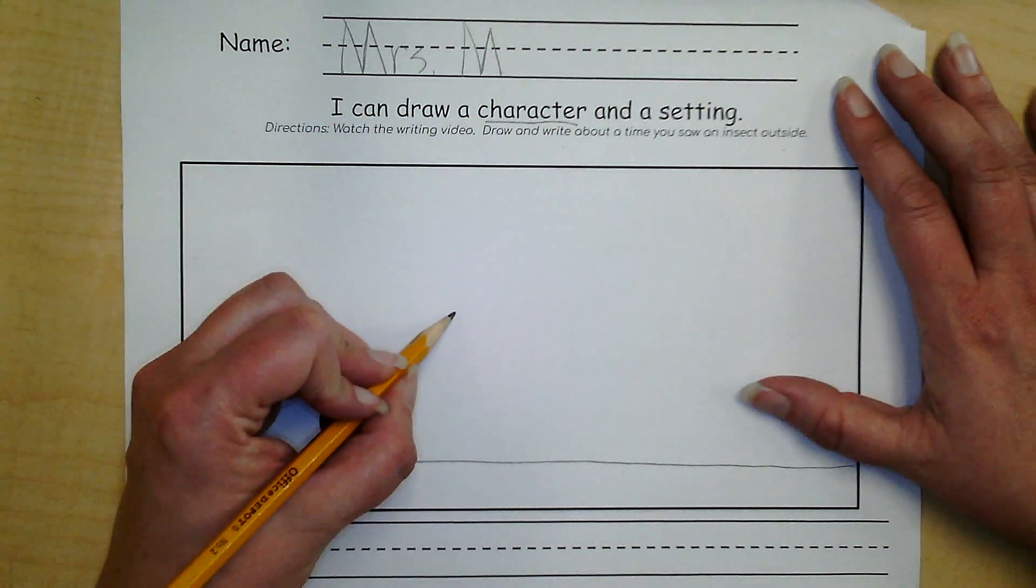So I'm going to write I. And then I need to think about the rest of my sentence. I'm going to write I see ants. So my next word is the word see. Let's see. I'm going to do a finger of space. And then I'm going to write s-e-e. I see.